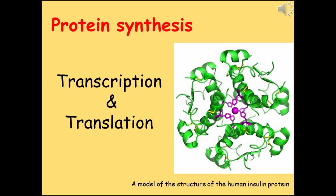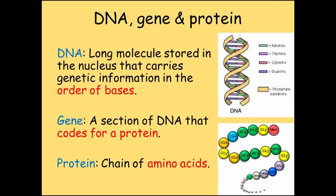Living things are mostly made of proteins. A human is made up of something like 2 million different proteins, and each one is coded for by a gene. This video will show how DNA stores the information to make a protein and how it's used to actually construct the protein. First of all, let's check what we know by the terms DNA, gene and protein.